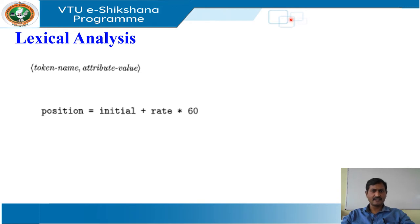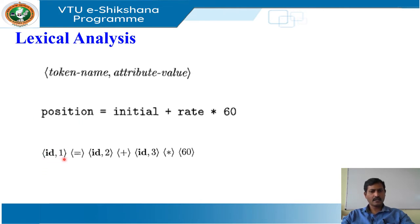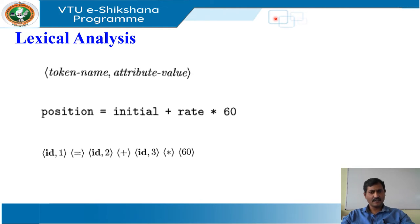For example, suppose the source program contains the assignment statement. The characters in this assignment statement could be grouped into the following lexemes and mapped into the following tokens passed on to the syntax analyzer. The first one, 'position' is a lexeme that would be mapped into a token id comma 1, where id is an abstract symbol standing for identifier and 1 points to the symbol table entry for position. The symbol table entry for an identifier holds information about the identifier such as its name and type.